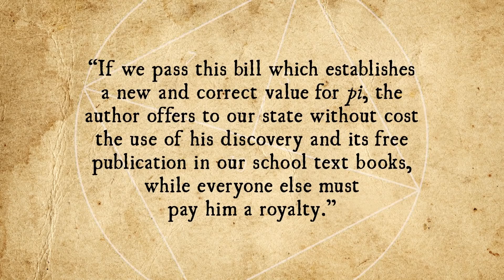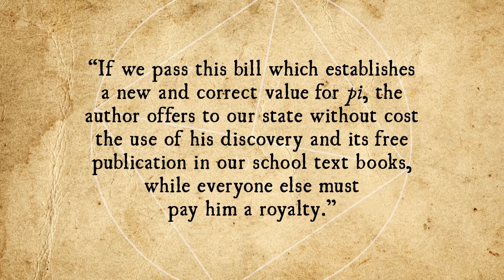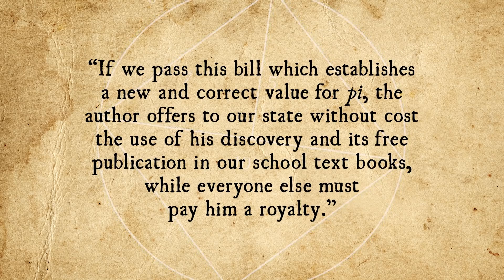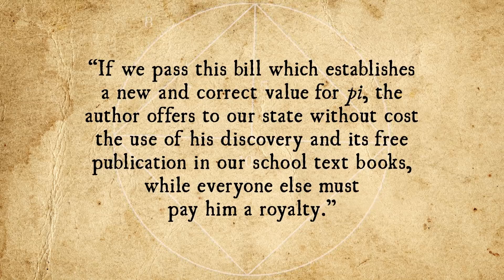While pending in the full House, one member, a former teacher, stated: "...if we pass this bill which establishes a new and correct value for pi, the author offers to our state without cost the use of his discovery and its free publication in our school textbooks, while everyone else must pay him a royalty." Unusually, the bill was read three times on the House floor — they had to suspend a rule to read it the third time — but finally passed with a vote of 67-0 on February 5, 1897. Obviously, though, no one had really understood what it actually said.